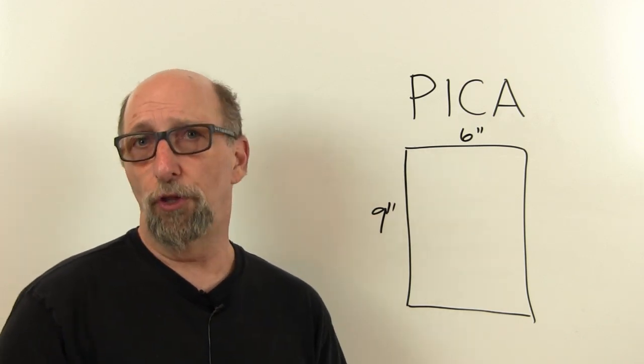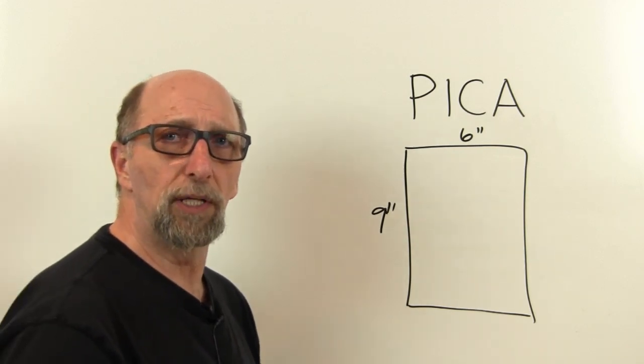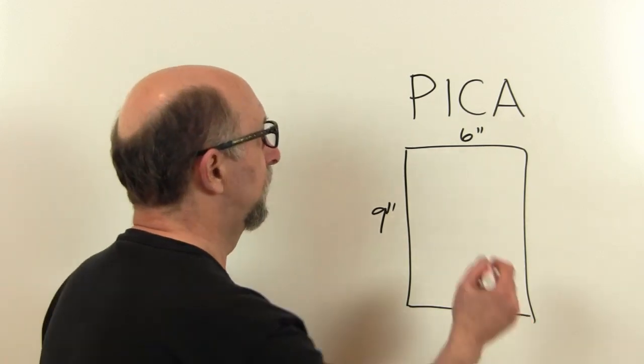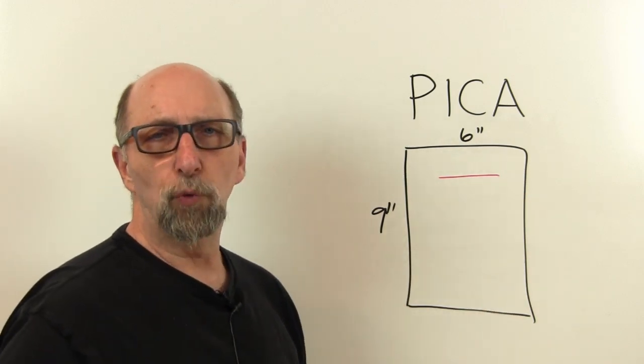This is another good thing about the Pica system. Suppose we decide how big our margins are going to be, and we end up with a type line that's 27 Picas.